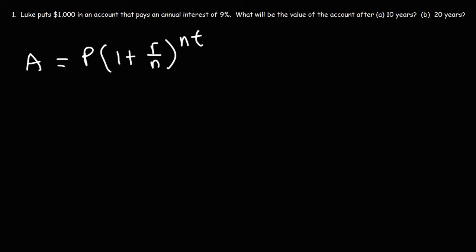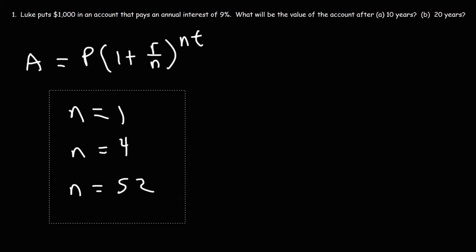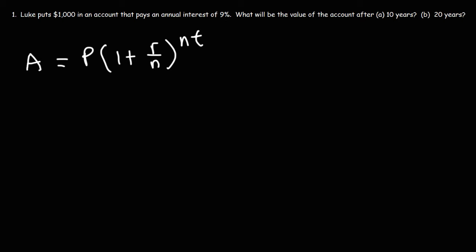If the account is credited with interest only once per year, N is 1. If it's compounded quarterly — that is, if the account receives interest 4 times a year — N is 4. If it's compounded weekly, then N is 52 because there are 52 weeks per year. N is the number of times the account is credited with interest per year, and T is the time in years.